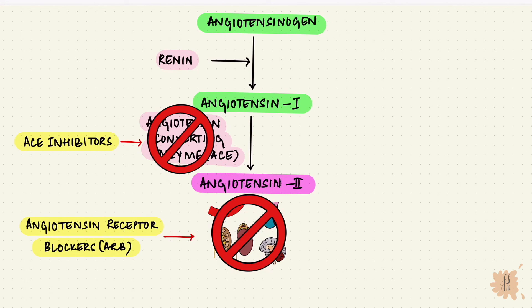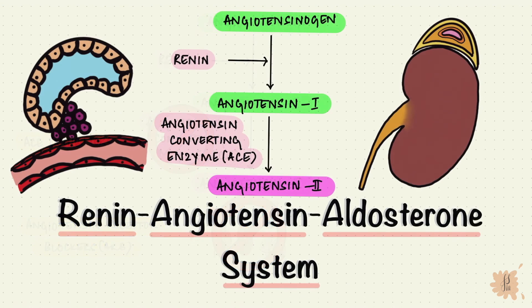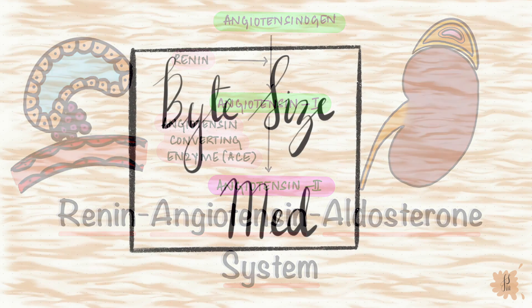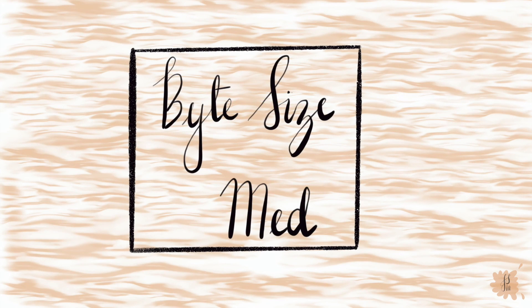And that is the renin-angiotensin-aldosterone system and the juxtaglomerular apparatus. I hope you found this video useful. If you did, give it a thumbs up and subscribe to my channel. Thanks for watching, and I'll see you in the next one.